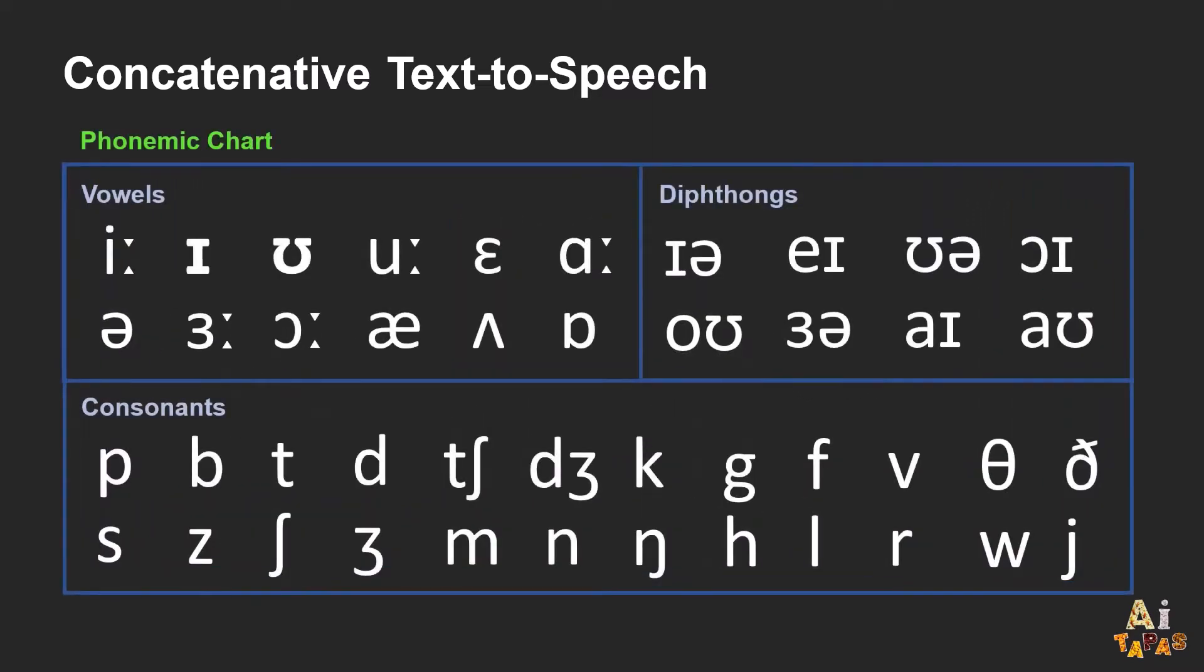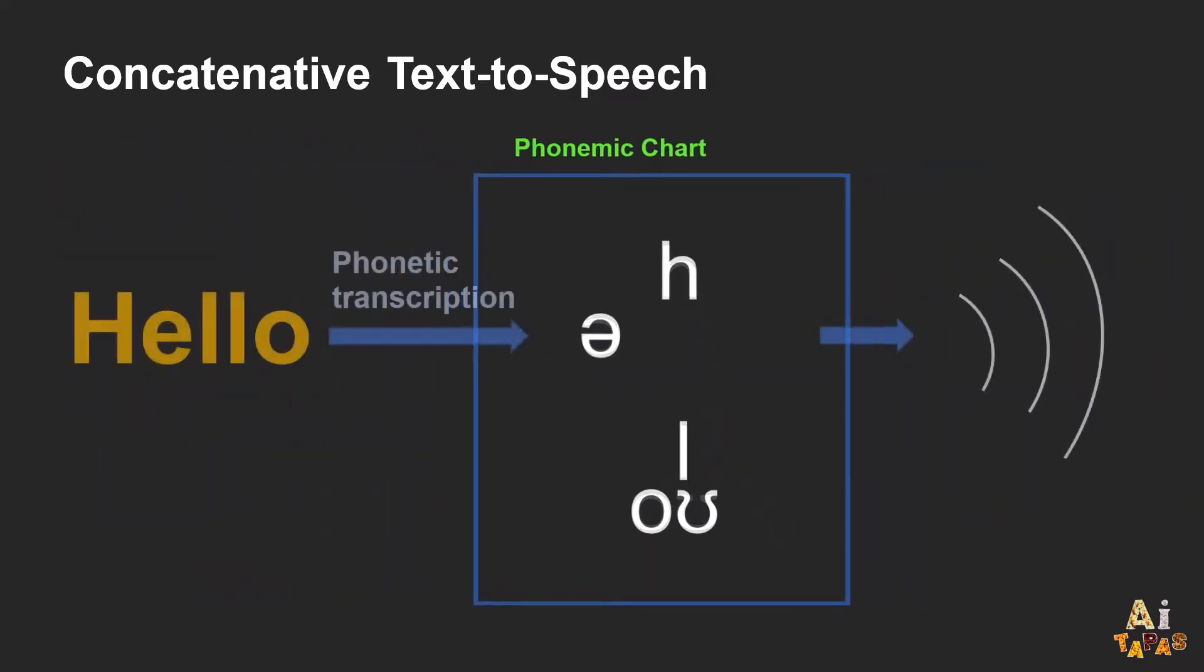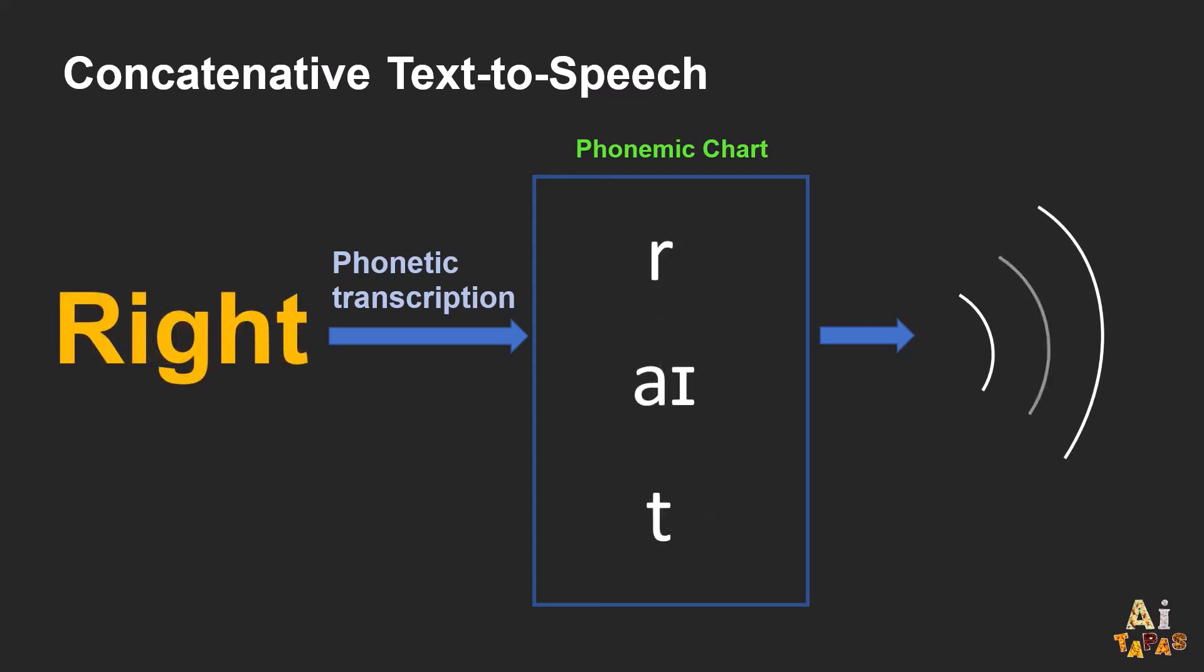In English, there are approximately 44 phonemes as shown in this chart. It is therefore not hard to imagine that if we could keep a dictionary of words with their corresponding phonetic transcription, we can perform text-to-speech with just 44 phoneme recordings.